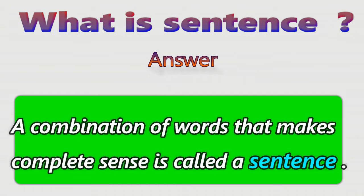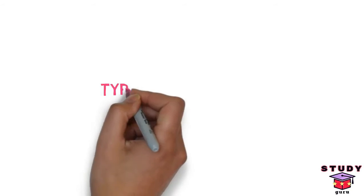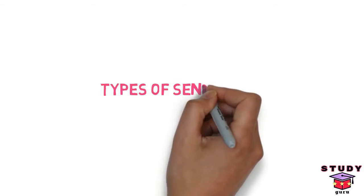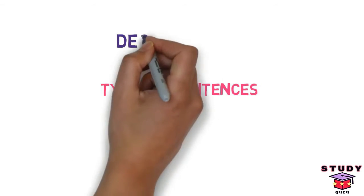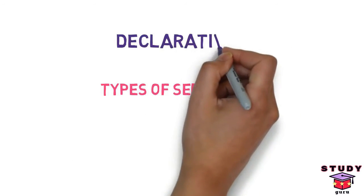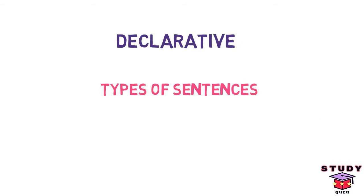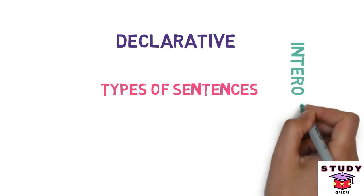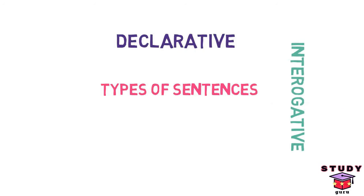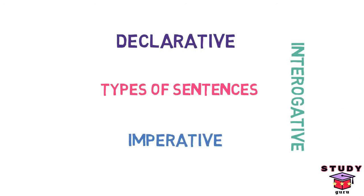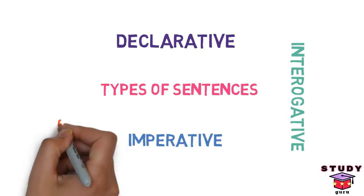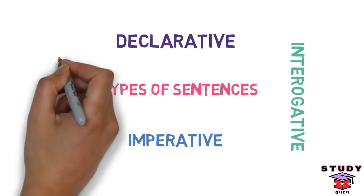Types of sentences. Sentences are mainly divided into four types. First, declarative sentences. Second, interrogative sentences. Third, imperative sentences. And fourth, exclamatory sentences.